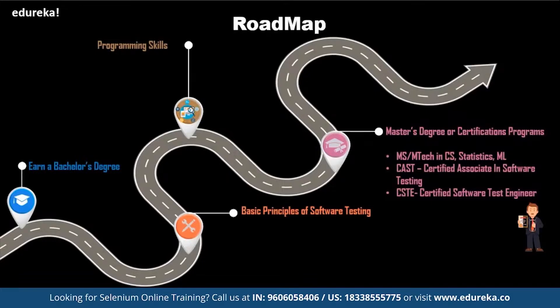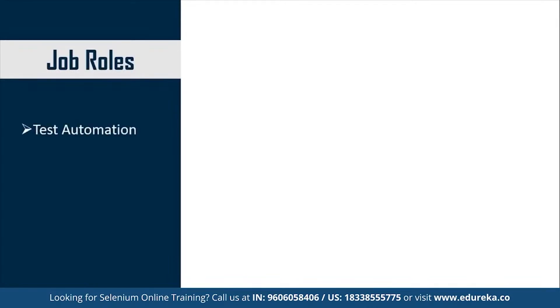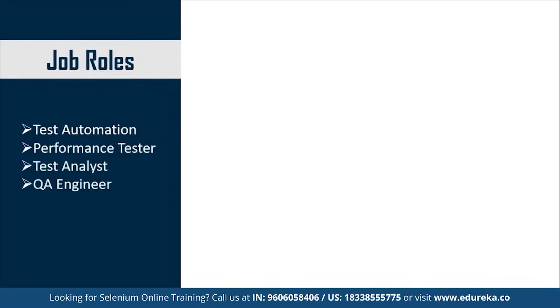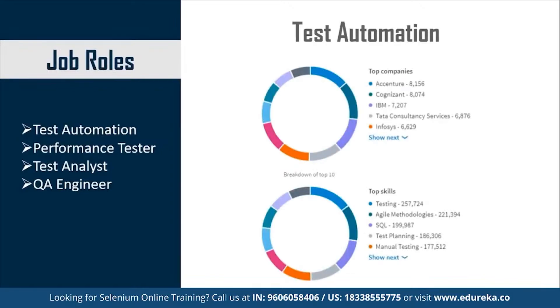Now let's look at the job roles for a test automation engineer. Some of the most common job profiles include test automation, performance tester, test analyst, and QA engineer. Looking at statistics provided by LinkedIn on these top profiles, some of the big companies in test automation include Accenture, Cognizant, IBM, TCS, and Infosys.